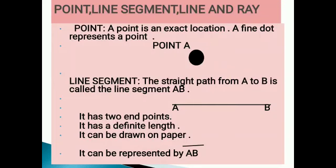Definitions: point, line segment, line and ray. First we will do the definition of point. A point is an exact location. A fine dot represents a point. Look at the dot. It represents point A.